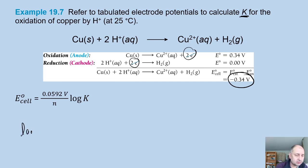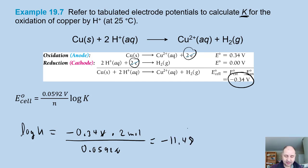The log of K is going to be equal to the negative 0.34 volts times n, which is 2 moles, divided by that 0.0592 volts. That's going to give me a number, it's negative 11.48. So now I have to take the inverse log, or 10 to the negative 11.48, is going to be equal to K, which in this case is equal to 3.3 times 10⁻¹².